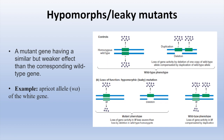When Muller conducted dosage experiments with apricot alleles, he found that as the dose of the apricot allele increased, the mutant phenotype becomes less severe. In this figure, we can observe that gene activity is decreased or lost by deletion and compensated by duplication in the wild type.